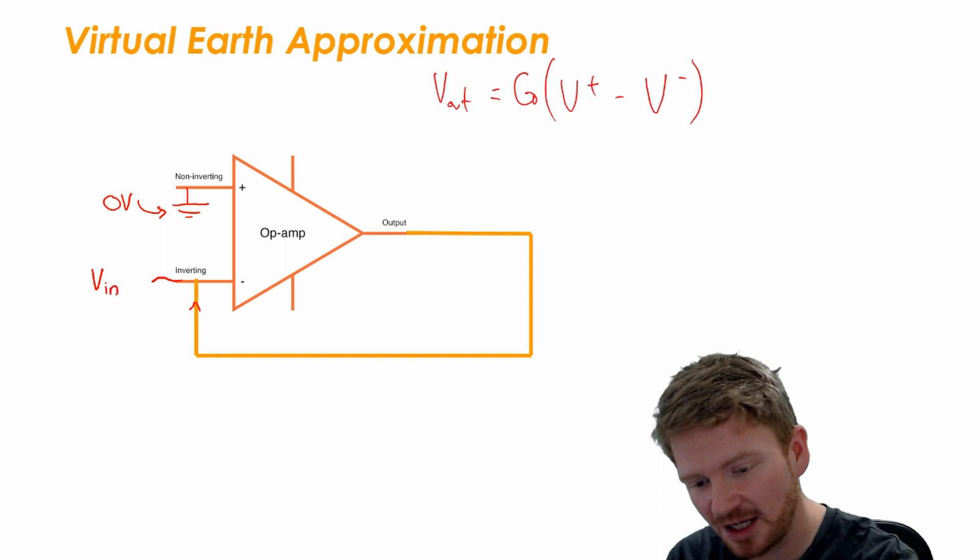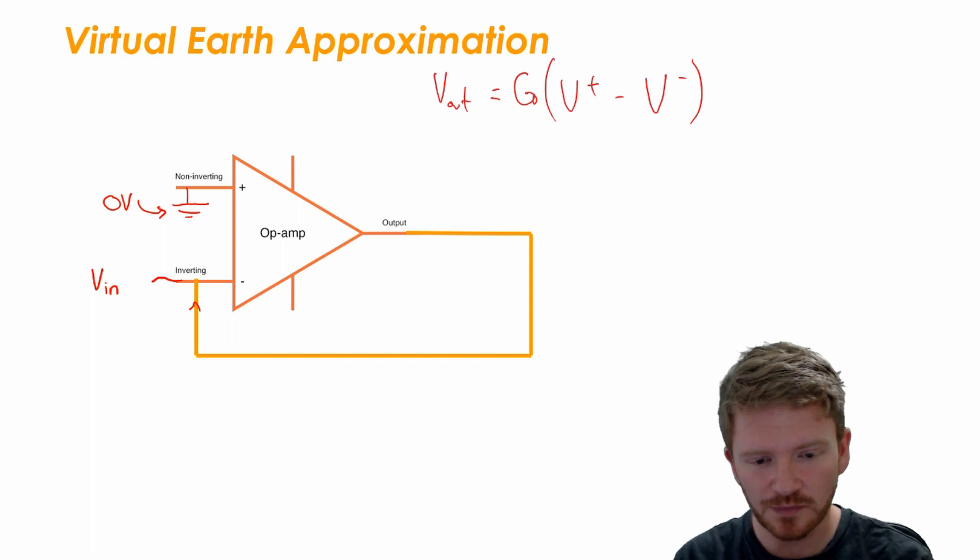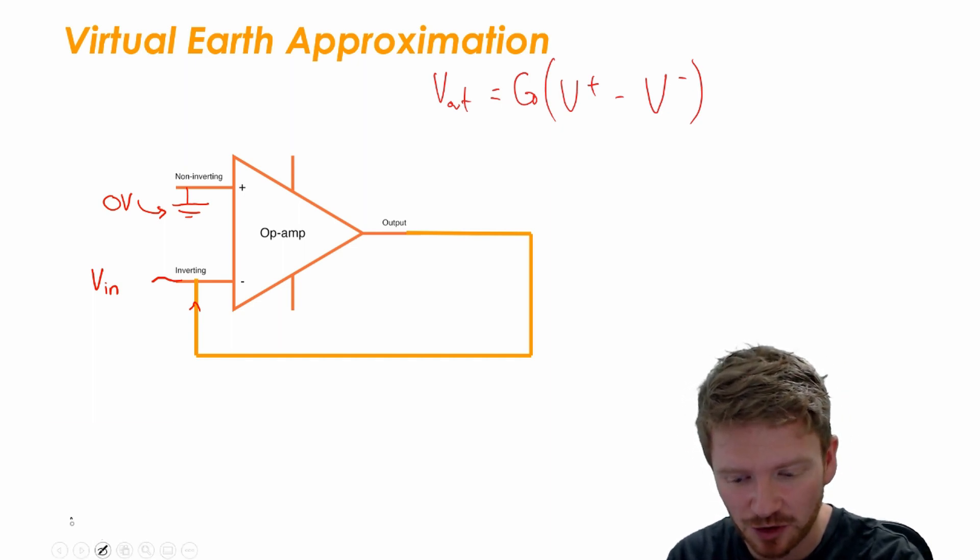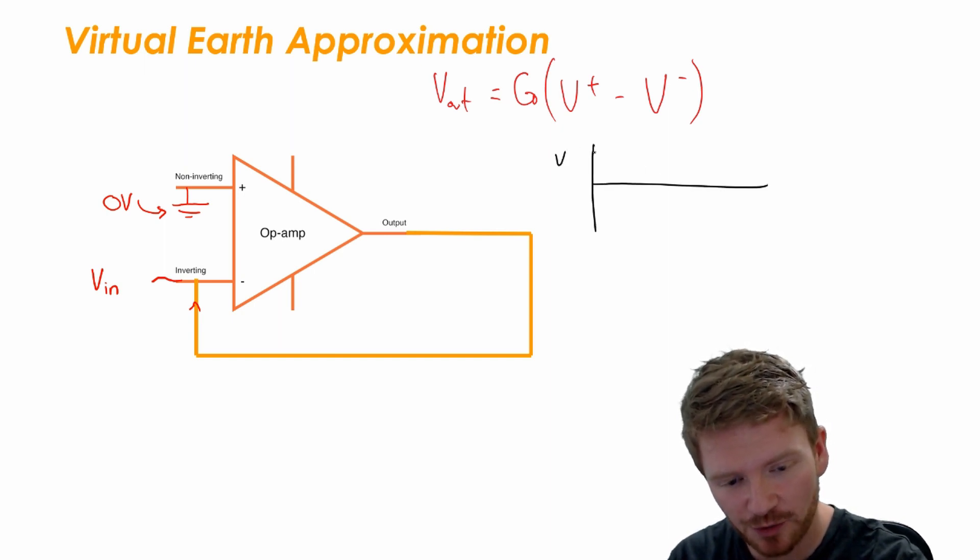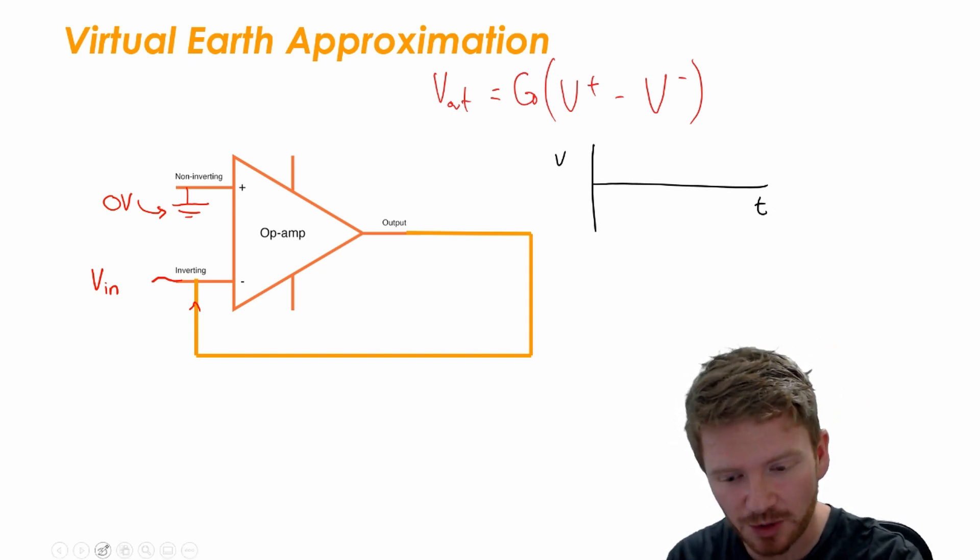So I have the non-inverting input now connected to zero volts and now I put an input voltage into my inverting input. So what's gonna happen now? Well, let's again, I'm a big fan of these graphs, let's think about our voltage time graph once again.